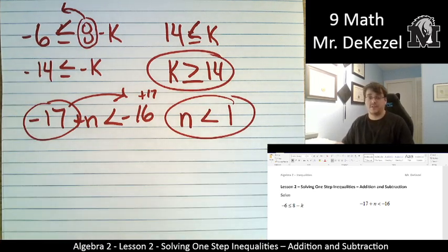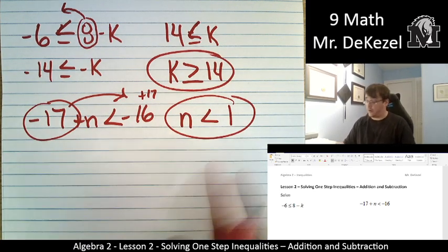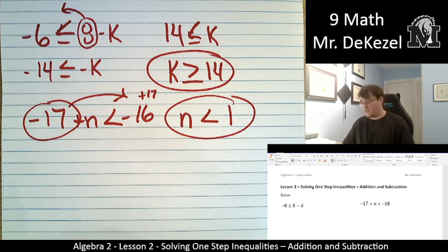There's no equal sign here. There's no flipping it around. Our variable is already on the left. It's positive. Everything is good. n is less than 1 in this case.